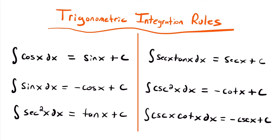Before we end, let's cover the trigonometric integration rules. These are the exact opposite of your derivative rules for trig functions. The integral of cosine x is sine x plus C. The integral of sine x is negative cosine x plus C. The integral of secant squared x is tangent x plus C. The integral of secant x tangent x is secant x plus C. The integral of cosecant squared x is negative cotangent x plus C. And the integral of cosecant x cotangent x is negative cosecant x plus C.